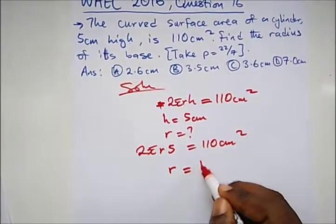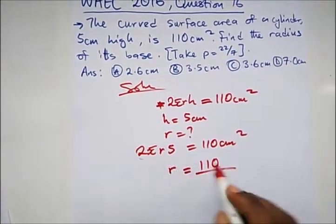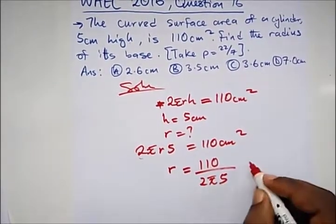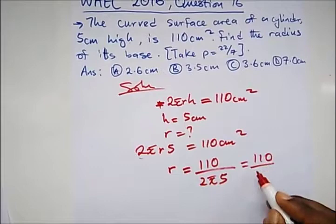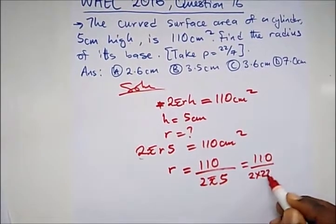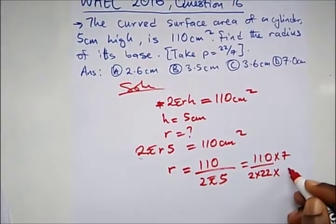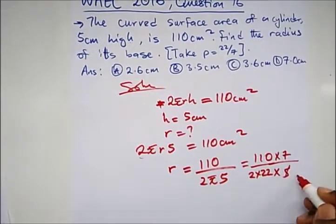To get r, what do we do? r will equal 110 divided by everything here, that's 2π and 5. So we have 110, what is our π? 22 over 7. So it would be 2 times 22, carry 7 up, times 7, and times 5.